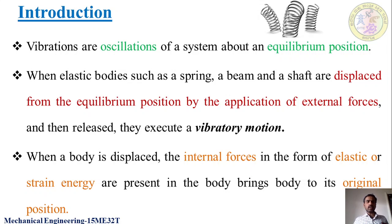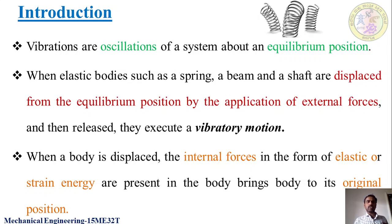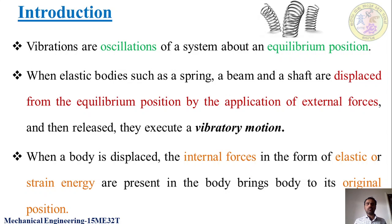First, let us see what vibration is. Vibrations are oscillations of a system about an equilibrium position. If we have a body in the equilibrium position, the body will oscillate with reference to that equilibrium position - such motion is called vibration. Elastic bodies such as a spring, a beam, or a shock absorber, when displaced from the equilibrium position by the application of external force, will execute vibratory motion.